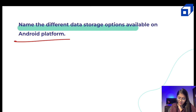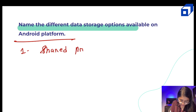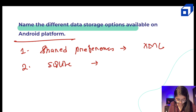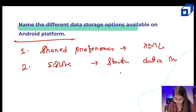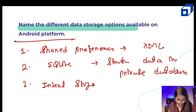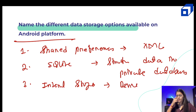Moving ahead, we have to name the different data storage options available on the Android platform. Number one: Shared Preferences — it stores data in XML files. Then you have SQLite, which is very famous — it stores structured data in private databases. You also have internal storage, where you can store data in the device file itself — you would have seen apps like WhatsApp create folders in your Android device's file manager.